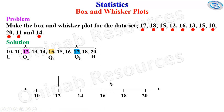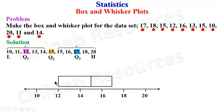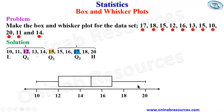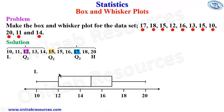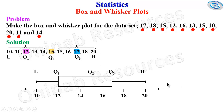We use three strokes to draw our box. Then the lowest value and the highest value are whiskers extending to the left and right respectively. So we have: the lowest value, Q1, Q2, Q3, and the highest value. With this, we have represented the data set in the box and whisker plot.